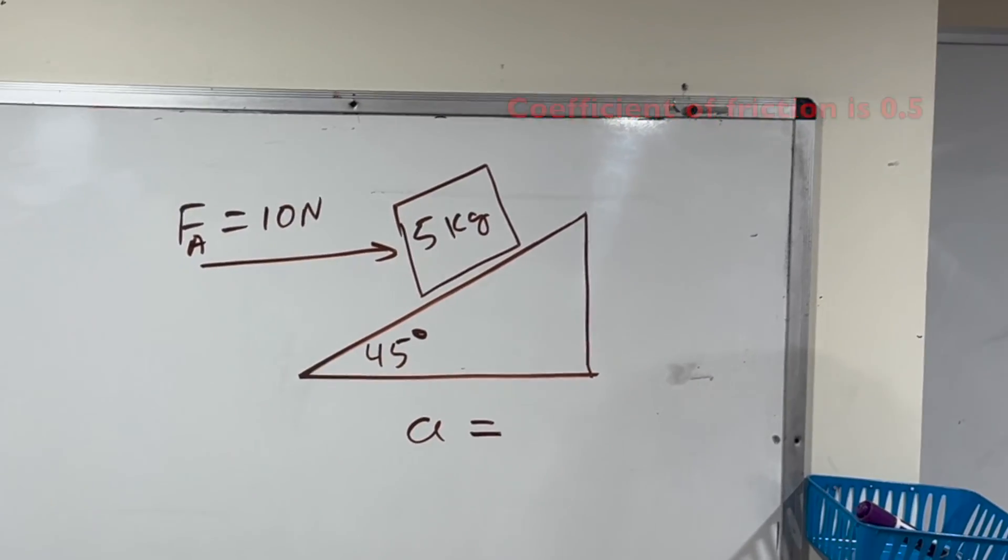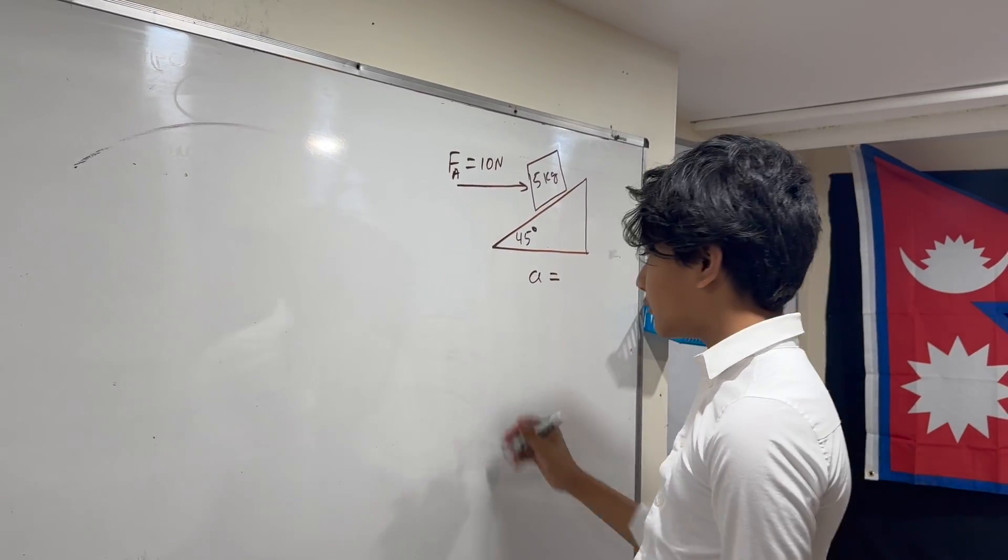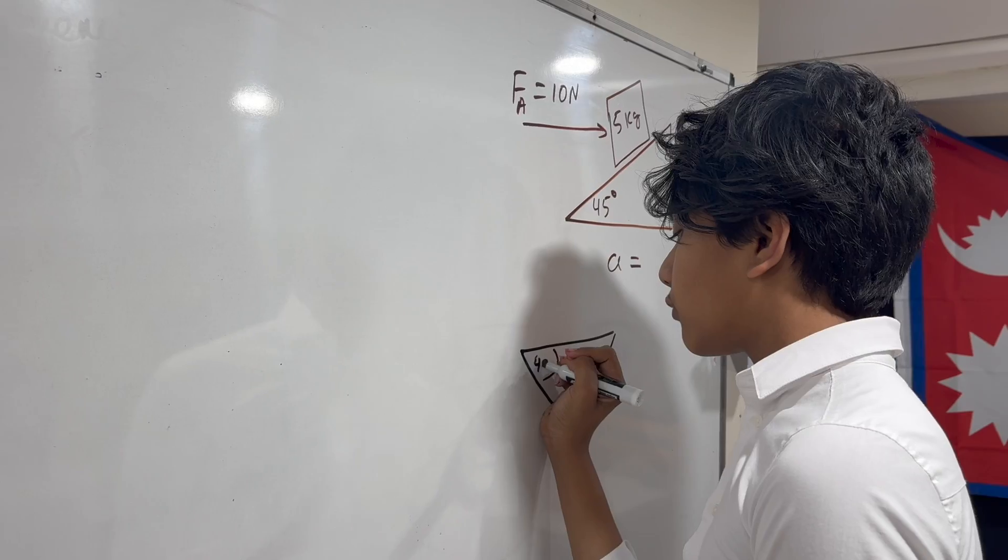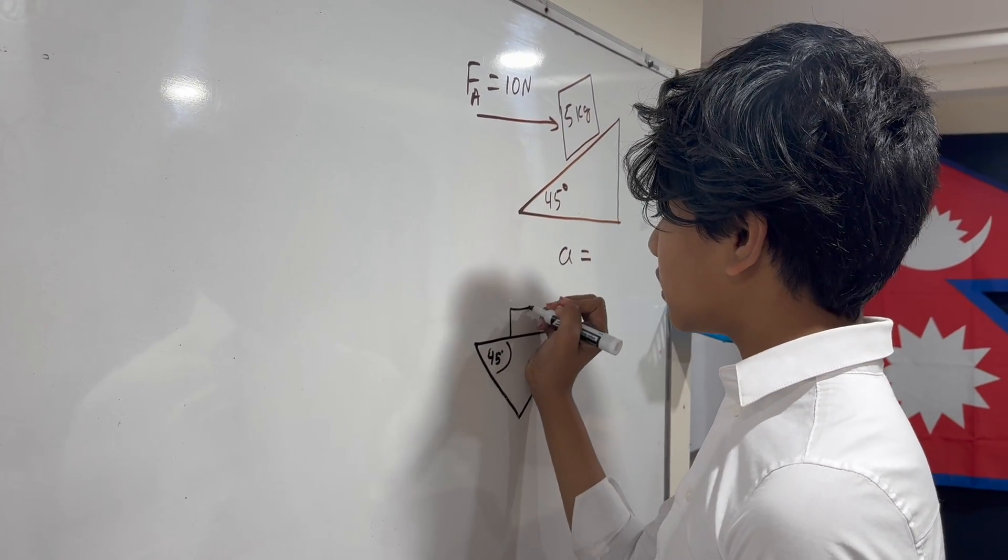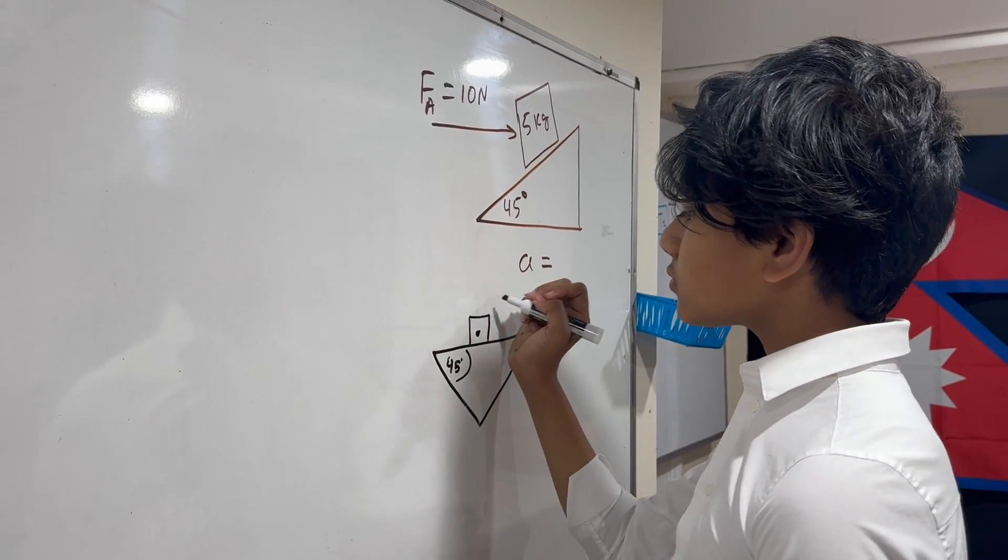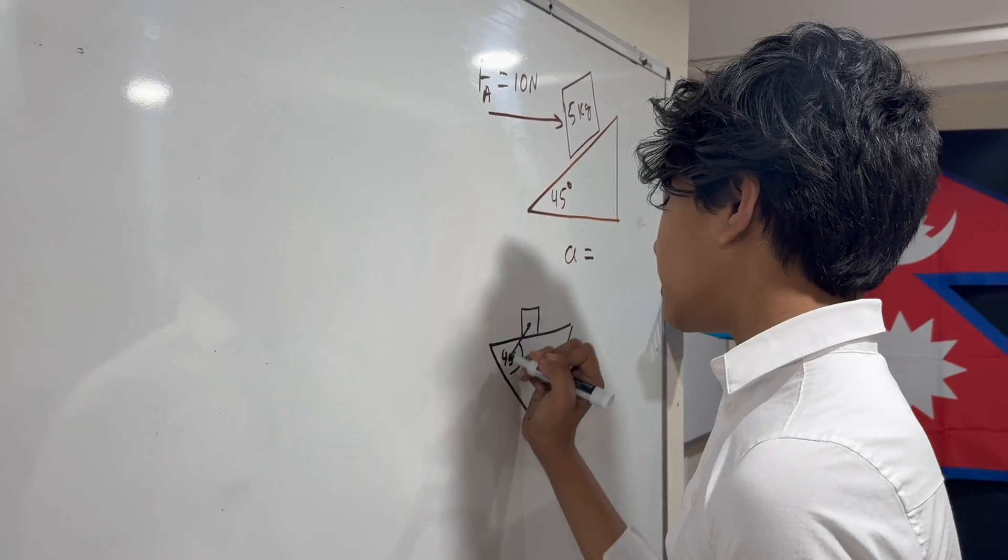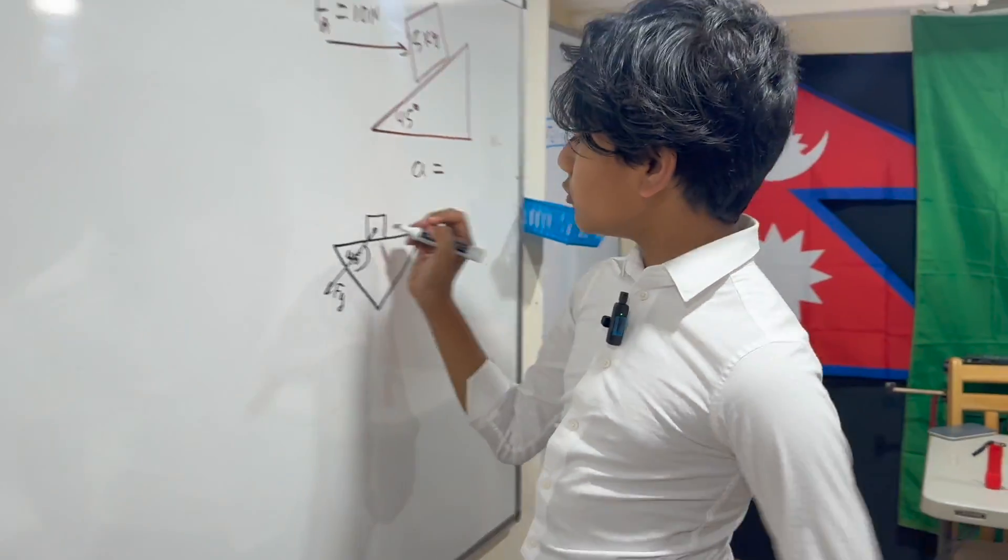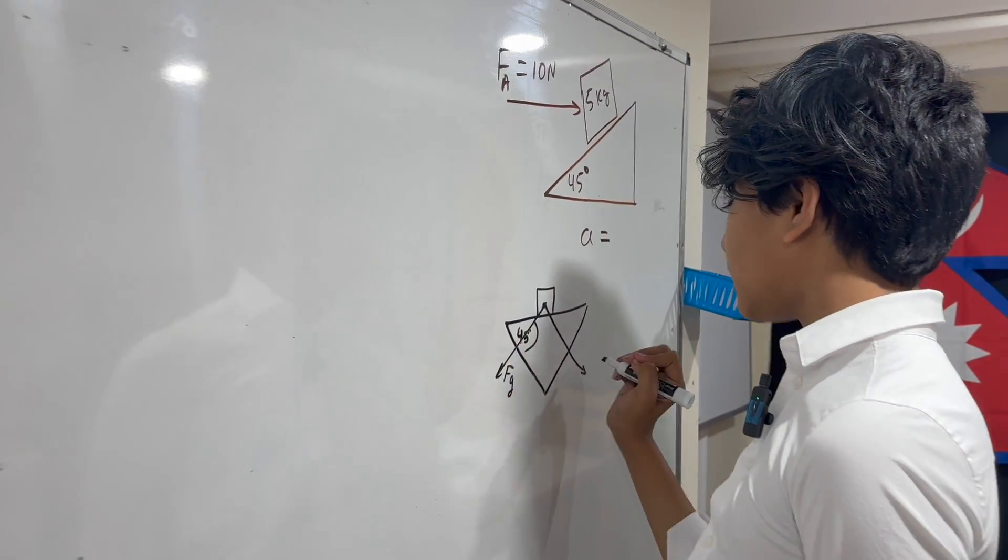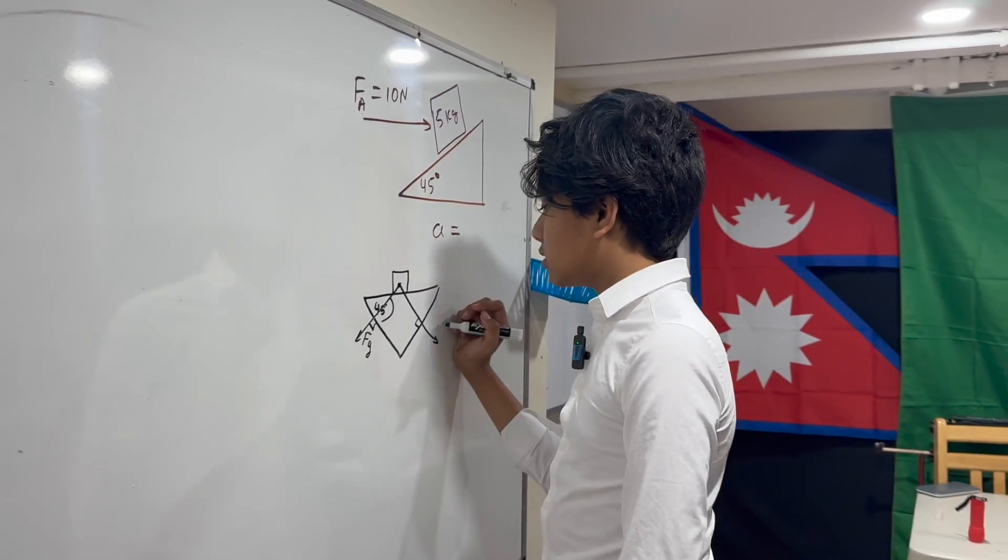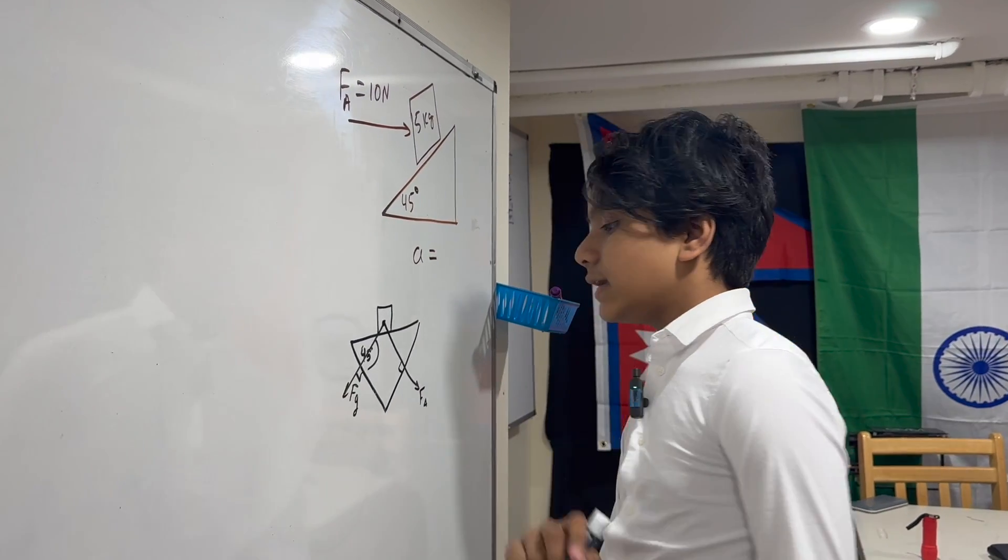First, I'm going to rotate my reference frame 45 degrees so that the inclined plane looks horizontal. This is our 45 degree angle. Once you start thinking in these coordinates, the gravity is going to face this direction, meanwhile the applied force is going to face this direction.